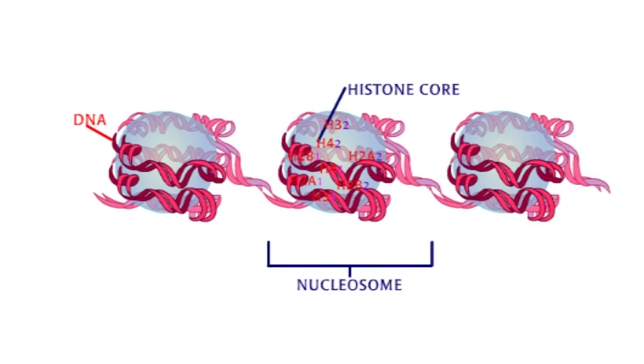This histone core with wrapped DNA is called a nucleosome. This is an electron micrograph of chromatin. This fiber is called the 10-nanometer fiber. But where is the H1 histone?